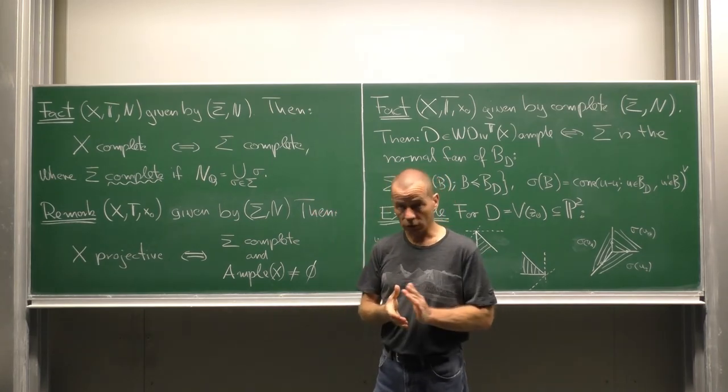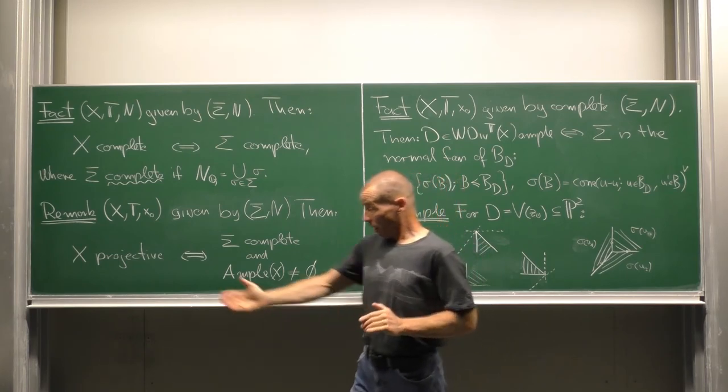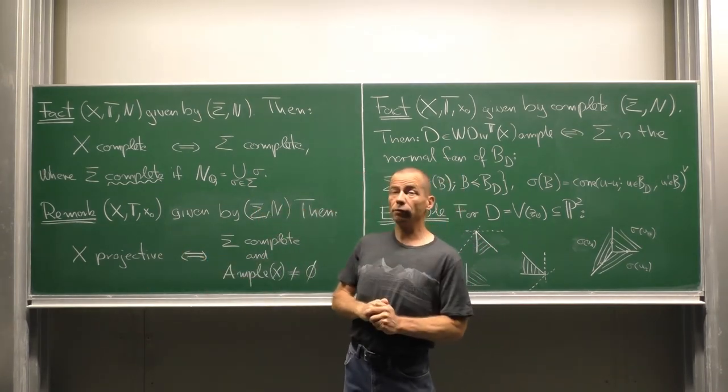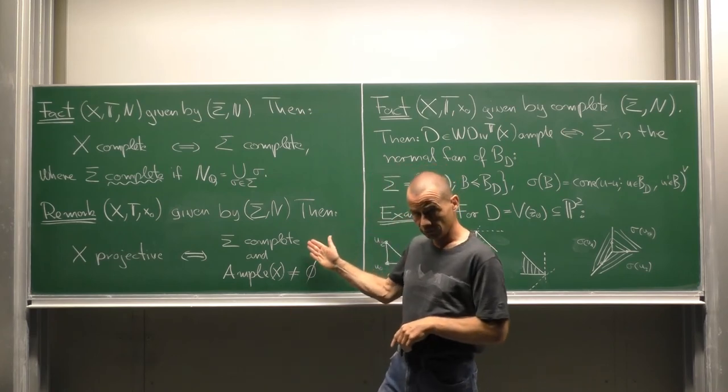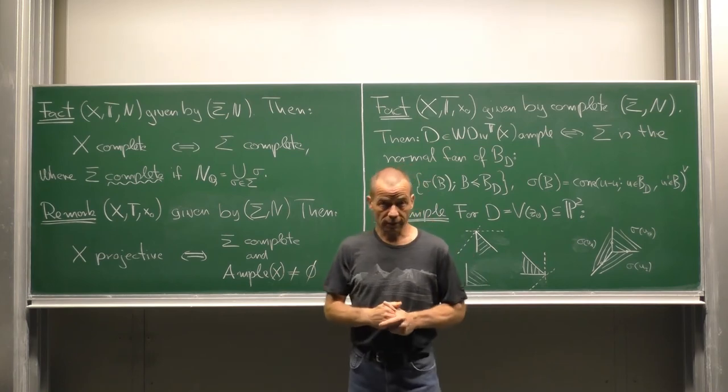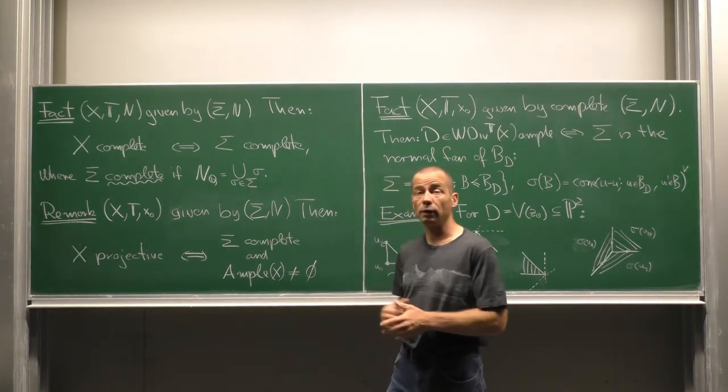Now consider the toric variety given by the lattice fan. X is projective if and only if the fan is complete and there exists an ample divisor on X. That means the ample cone is non-empty.